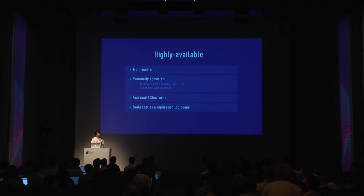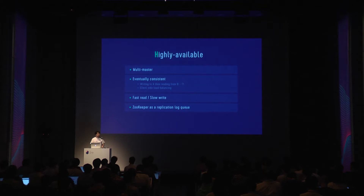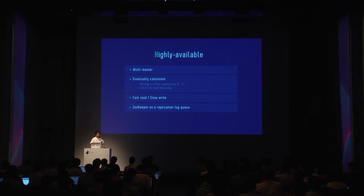However, as you know, no distributed storage is perfect and we made some trade-offs. A Central Dogma cluster is eventually consistent, which means it may take some time for a change in one replica to be propagated to another. For example, if you make a change in replica A and then immediately try to get that change from replica B, you may not find it — you will have to wait a little bit, or just query replica A where you pushed your change directly.